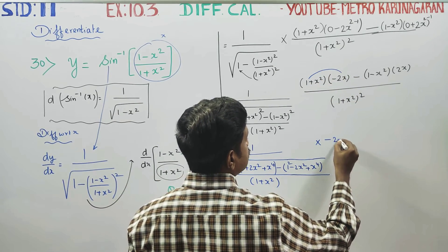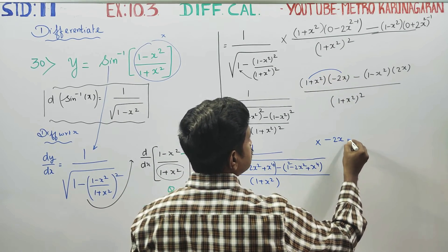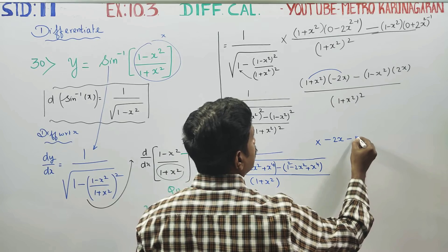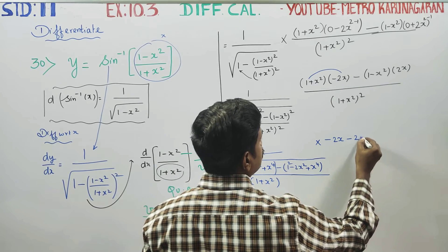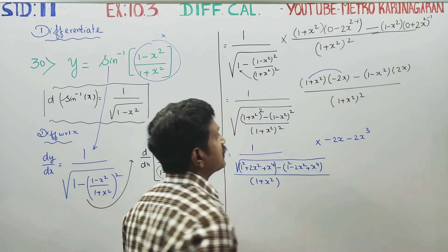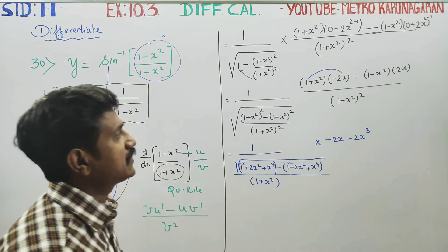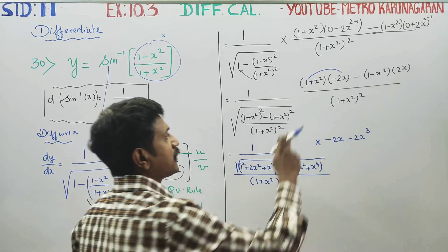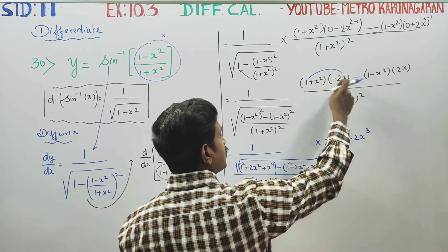We get: minus 2x, minus 2x power 3, minus 2x power 3, minus 2x.